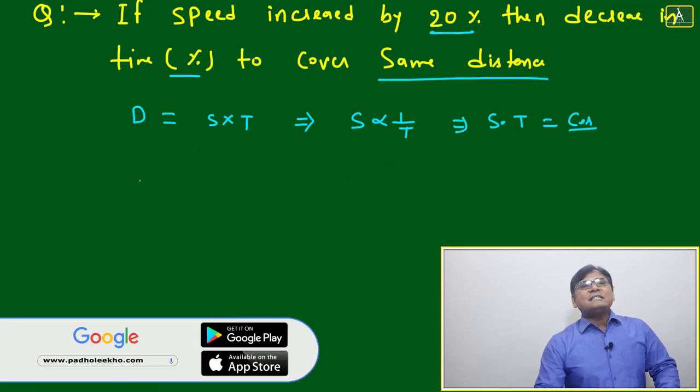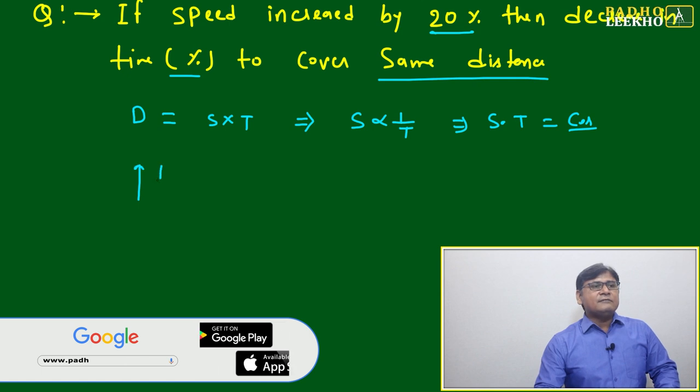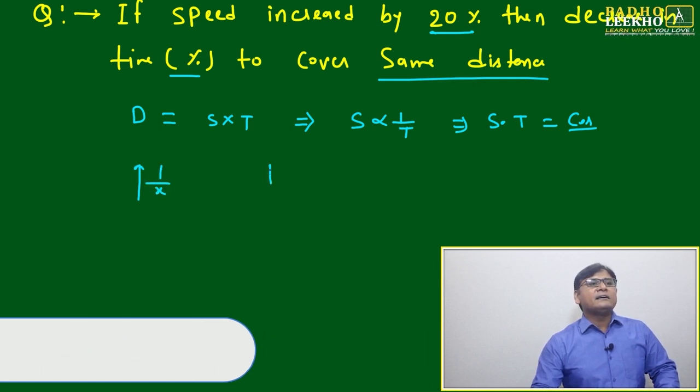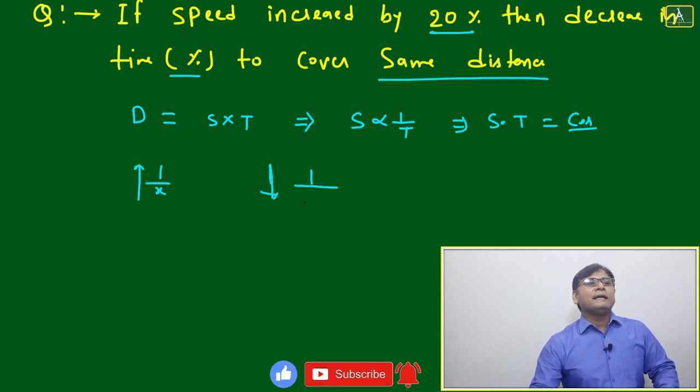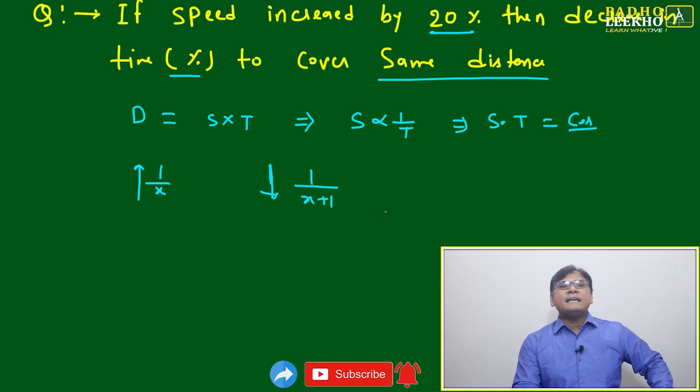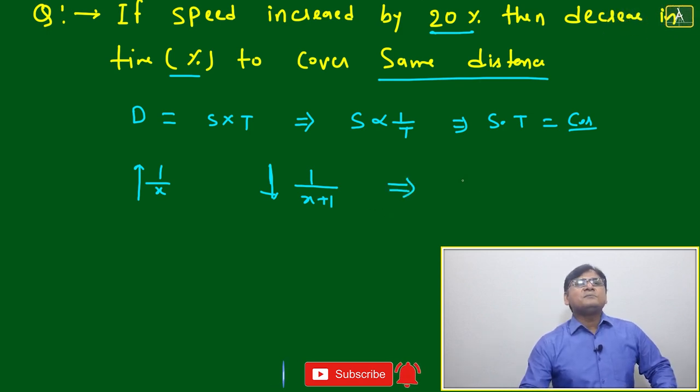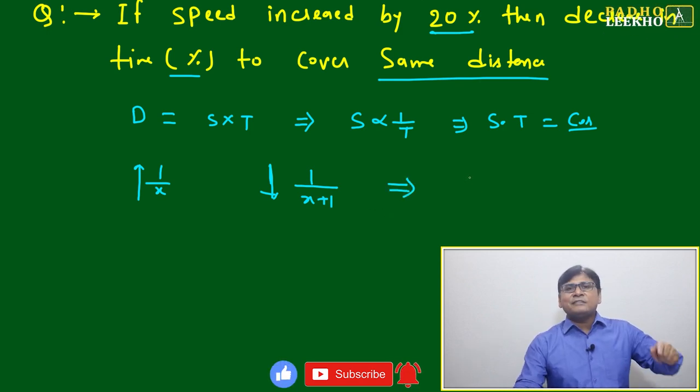Now, if two things are inversely proportional and one is increasing by 1/x, then the other will decrease by 1/(x+1). The speed is increased by 20%. We will convert this: 20% becomes 1/5 using our technique.